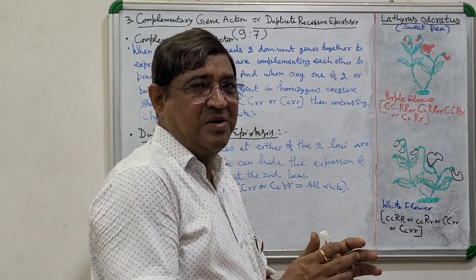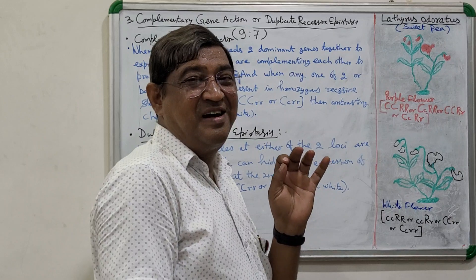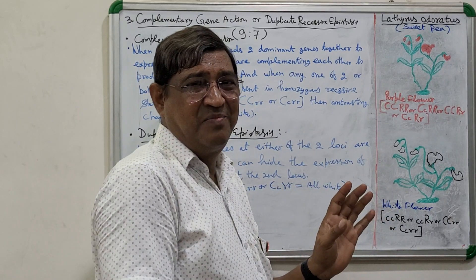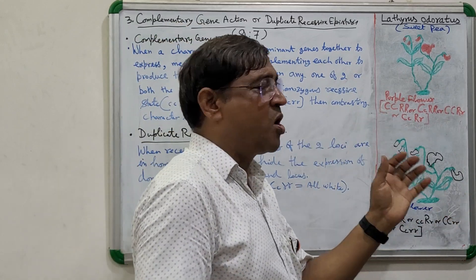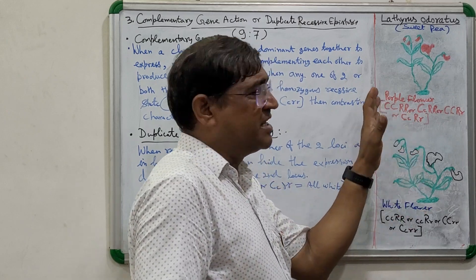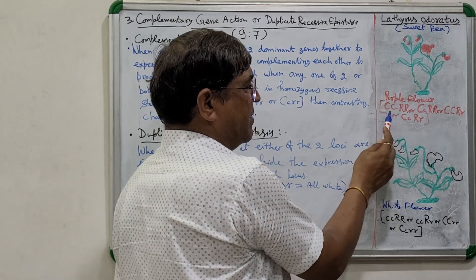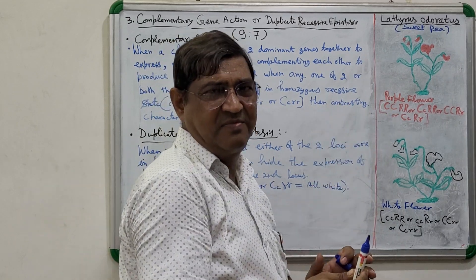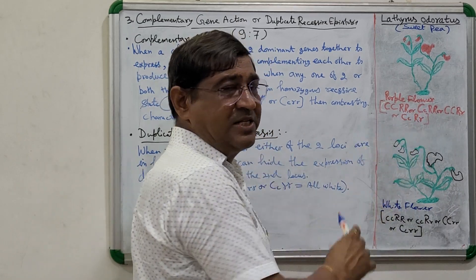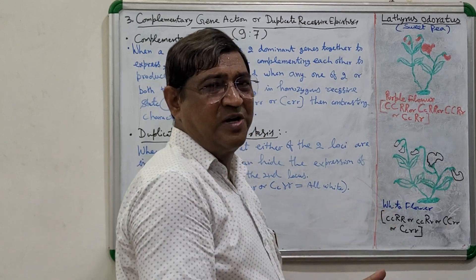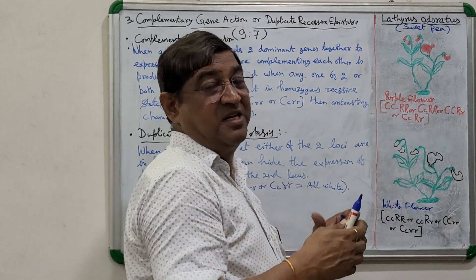When both genes are coming together in dominant phase — whether in homozygous dominant or heterozygous dominant phase — they are complementing each other and giving the product. In sweet pea, purple color comes only when capital C capital R is present. Both in dominant phase: capital C capital C capital R capital R, or capital C small c capital R capital R, or capital C capital C capital R small r — all give the purple product.